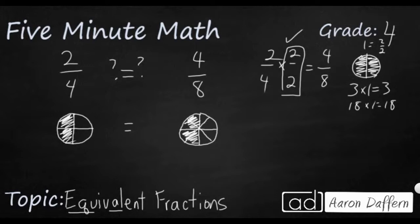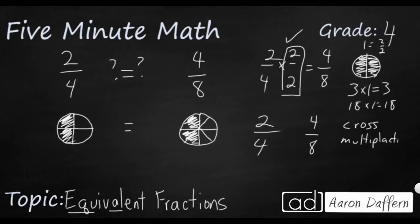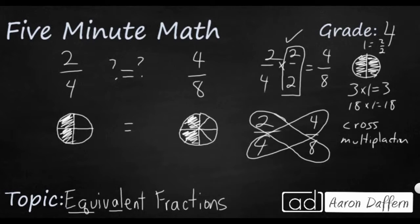Two-fourths is equal to four-eighths. Here's another way. So far we've looked at pictures and whether you can multiply the numerator and denominator by the same number. Sometimes you can do something called cross-multiplication. Cross-multiplication looks at the relationship between the product of one numerator and denominator and the other numerator and denominator — see how it makes a big X? So we go two times eight equals sixteen, and four times four equals sixteen. If you get the same product, that means those two are equivalent.